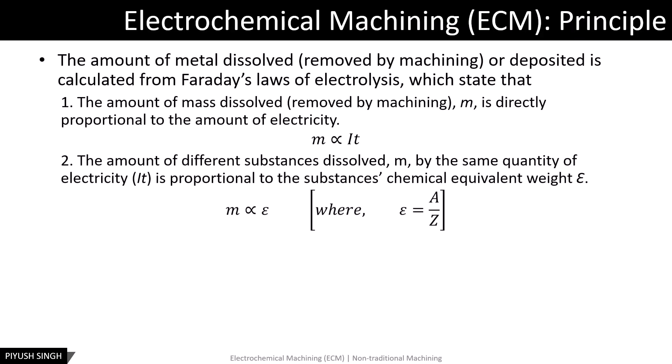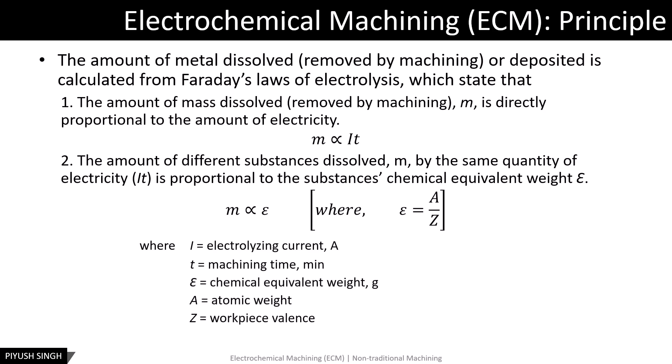The amount of metal dissolved or removed by machining in ECM, or deposited in electroplating, is calculated from Faraday's laws of electrolysis. The first law states that the amount of mass dissolved or removed, M, is directly proportional to the amount of electricity — that is, M is directly proportional to I×T, where I is the current and T is the time, so the product I×T gives the electric charge supplied. According to the second law, if the same amount of electricity is supplied to different materials, the amount of mass of a given material is proportional to the material's equivalent weight, which is the ratio of its atomic weight and valency.